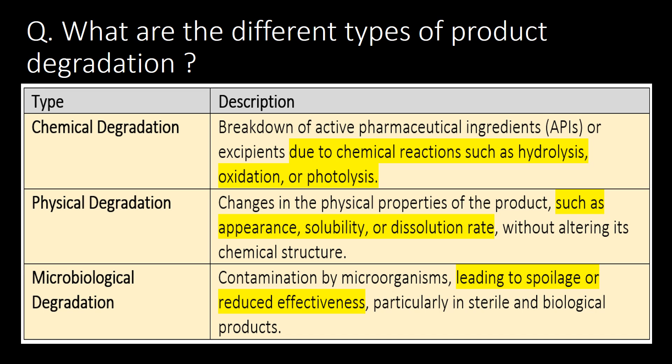Second type: physical degradation — this includes changes in physical properties of the product such as appearance, solubility, or dissolution rate. And third type: microbial degradation — contamination by microorganisms leading to spoilage or reduced effectiveness.